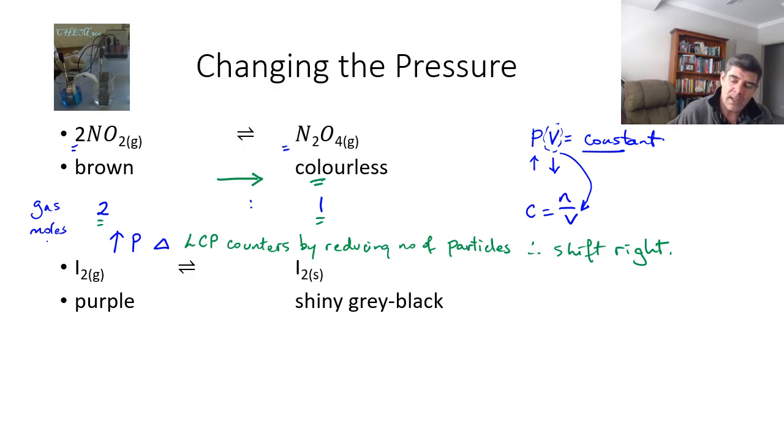Now what happens when we have an equilibrium which involves a gas and a solid? So here is iodine, we know that iodine sublimes. And that means it goes straight from a solid into a gas, and it can actually set up an equilibrium between the solid and the gas. The gas is more of a purple colour, the solid is a shining sort of grey black colour.